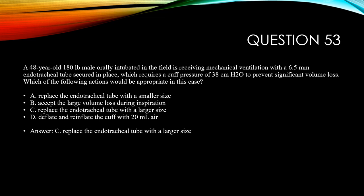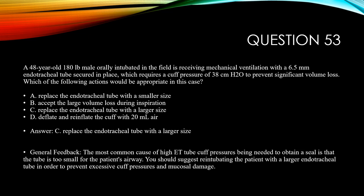The answer is C, replace the endotracheal tube with a larger size. The most common cause of high ET tube cuff pressures being needed to obtain a seal is that the tube is too small. You would re-intubate with a larger endotracheal tube, or use a tube exchanger, to prevent excessive cuff pressures and potential mucosal damage. If using a tube exchanger, make sure trained personnel and intubation equipment are present, because around a third of the time the exchange doesn't pass well and re-intubation becomes necessary.